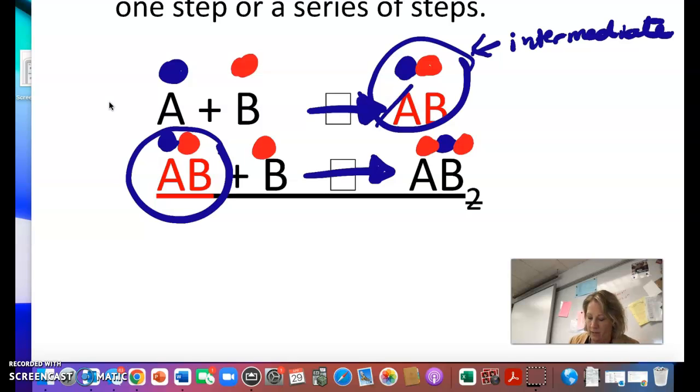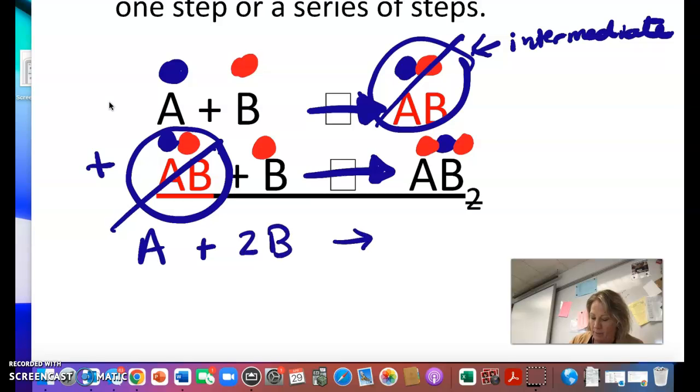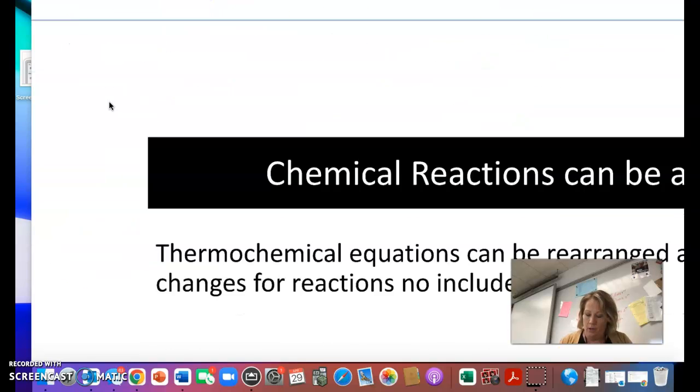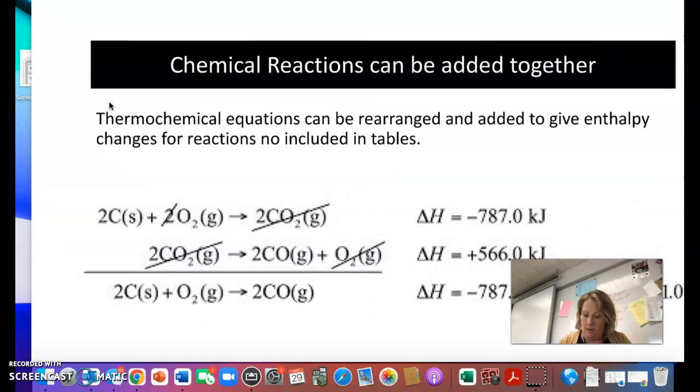So essentially we can cross it out and then we can add the reactions together, kind of like in algebra if we were adding. So if I add, I have the A plus two of the Bs, and then that would give me AB2. So that's the resulting reaction, but that reaction maybe came from these two reactions happening. So I can rearrange thermochemical equations and add together those reactions and their enthalpies to give me an enthalpy change for a reaction that I don't know.